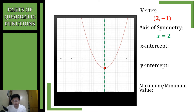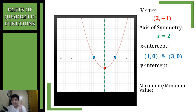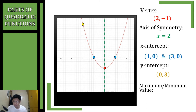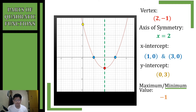For the x-intercepts, we identify the parts of the parabola that pass through the x-axis — we have two points: (1, 0) and (3, 0). For the y-intercept, we look at the y-axis and identify where the parabola intersects it: at the coordinate (0, 3). For the maximum or minimum value, since our vertex is at the lowest point, we get the minimum value, which is the y-coordinate of our vertex: negative 1.